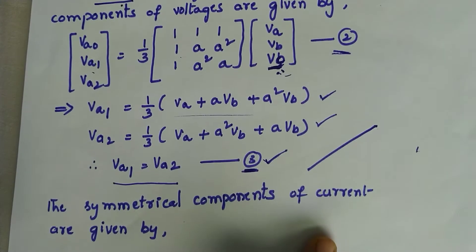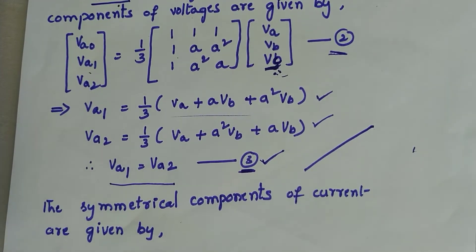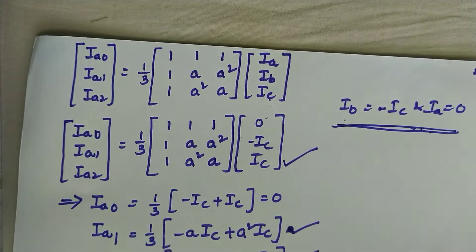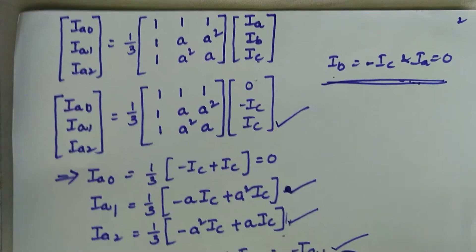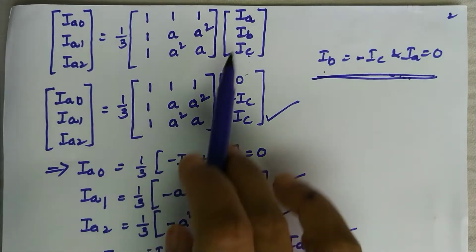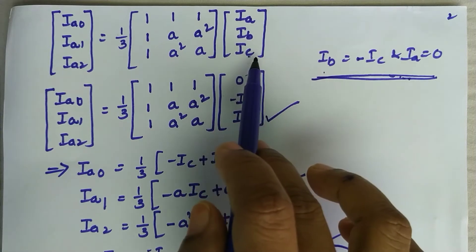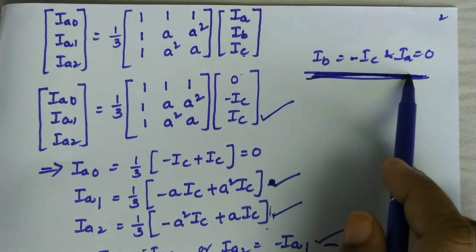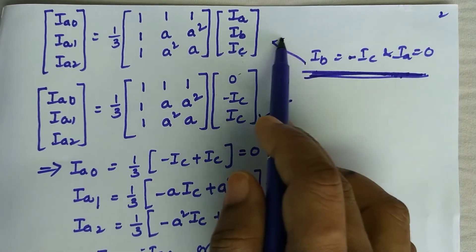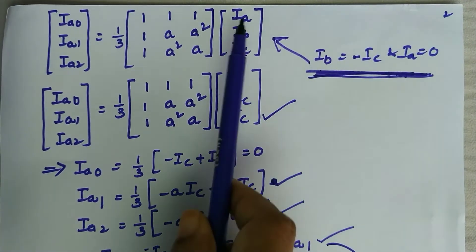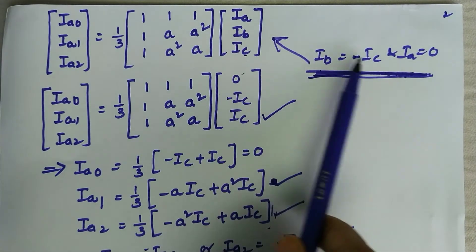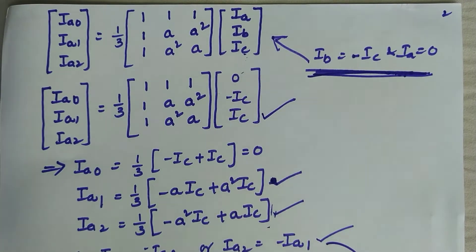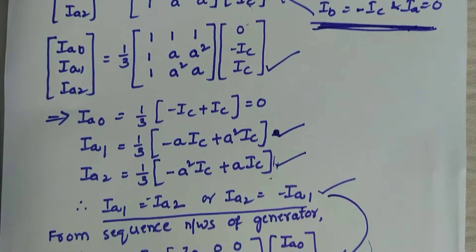Now we consider the symmetrical components of currents: Ia0, Ia1, and Ia2. These are the symmetrical components expressed in terms of the unbalanced currents. Substituting the line to line fault conditions into this equation: Ia equals 0, Ib equals minus Ic, and Ic equals Ic.